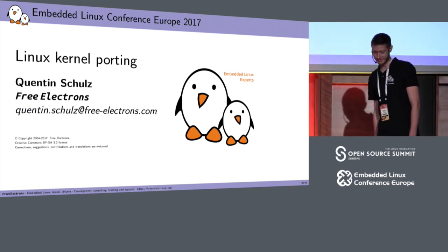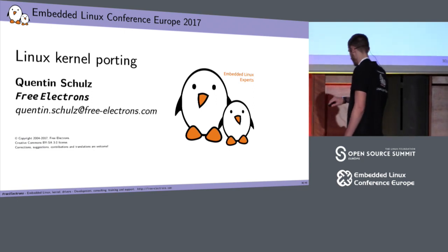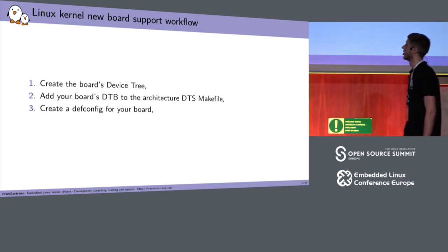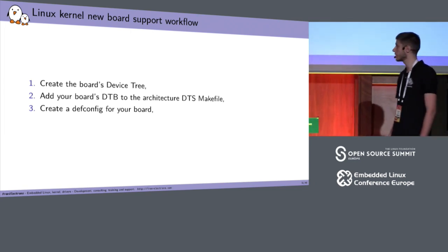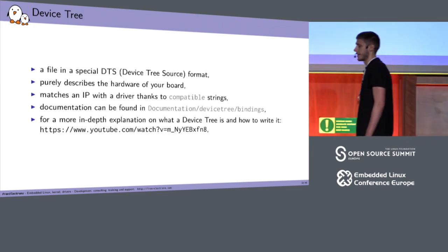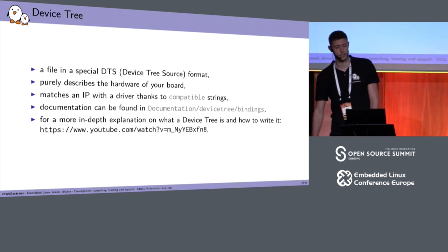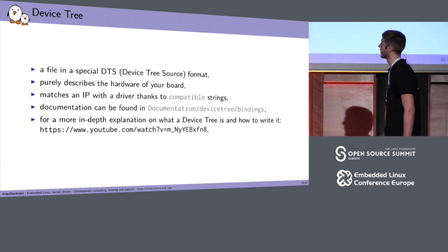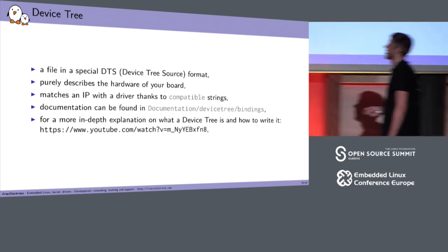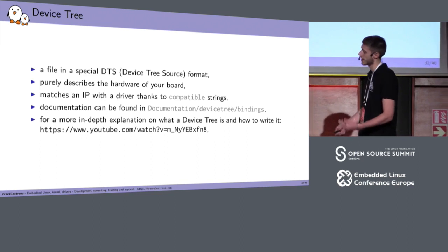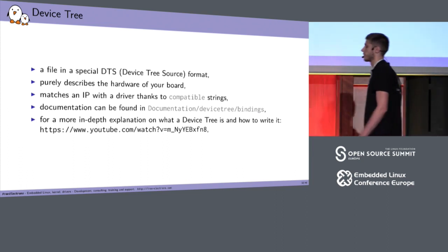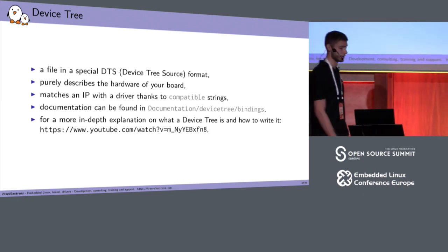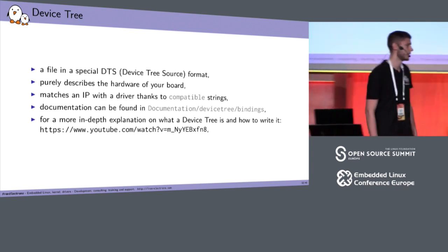That was it for uBoot. Now for the Linux kernel, it will be really quick. Your workflow: one, create the device tree for your board and add your device tree blob to the makefile; then create a defconfig for your board. The device tree is a file in DTS format that purely describes the hardware of your board, matching IPs with drivers via compatible strings. Documentation for device tree nodes is in Documentation/devicetree/bindings. For a deeper dive, see the talk by Thomas Pettazzoni, one of my colleagues, on device trees from four years ago.